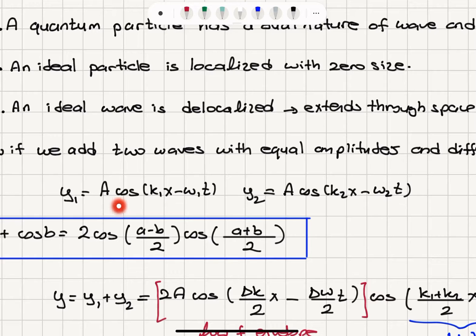consider a cosine k1x minus omega 1t, and a cosine k2x minus omega 2t.